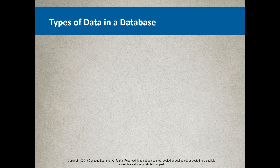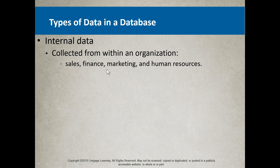Data is a critical part of how businesses operate and become successful. For example, at Douglas College, without a proper database tracking all students, courses, and faculty, it would be virtually impossible to run the college. There are two types of data going into these systems. Internal data is generated within the organization — at Douglas, things like student enrollments feed into finance, marketing, and human resources. All areas of an organization's structure tap into internally collected data.